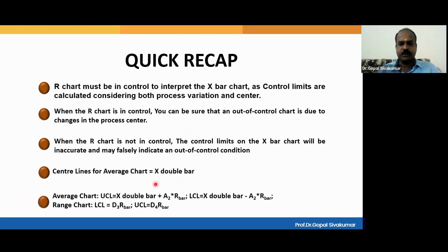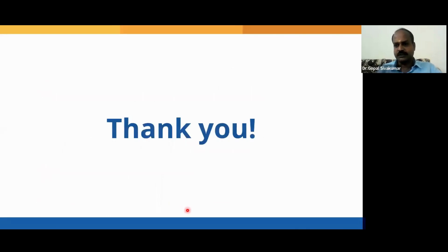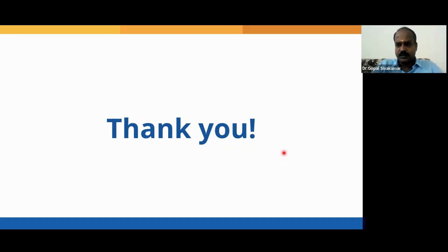Center line for the average chart is X double bar. Upper control limit for the average chart is X double bar + A2 × R bar; lower control limit is X double bar − A2 × R bar. Center line for R chart is R bar; lower control limit is D3 × R bar; upper control limit is D4 × R bar. A2, D3, and D4 are statistical constants based on the subgroup size. Always aim to get both the R chart and the X bar chart under control — thereby you can conclude that variation within the batch and variation between the batches are under control, and your process results are consistent, stable, and your products are acceptable. You can make better predictions when your control chart is under control. Thank you for watching this video; I will see you again in the next video.